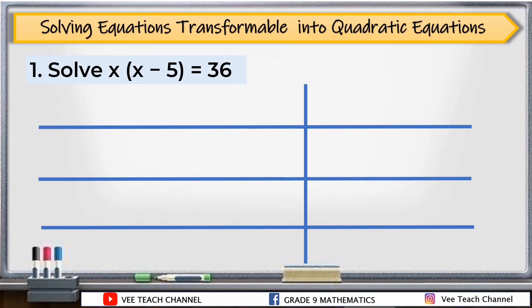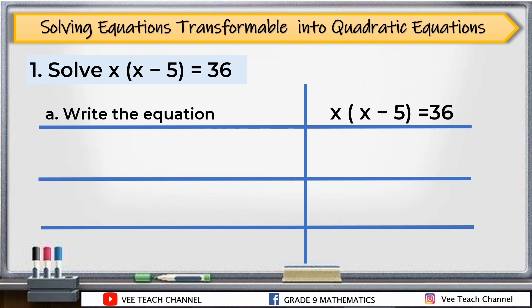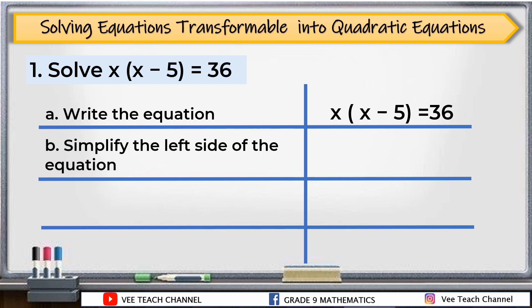Let's have our example. Number one: solve x times the quantity of x minus 5, equal to 36. First, we need to write our equation as you can see there, and then simplify the left side of the equation.